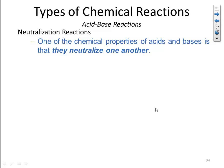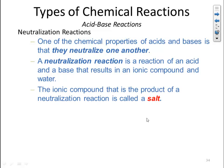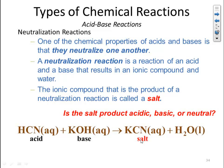One of the chemical properties of acids and bases is that they neutralize one another. A neutralization reaction is a reaction of an acid and a base that results in an ionic compound and water. The ionic compound — the product of a neutralization reaction — is called the salt. For example, HCN (an acid) reacting with KOH (a base) forms a salt plus water. We can then ask: what kind of salt is that — neutral, acidic, or basic?